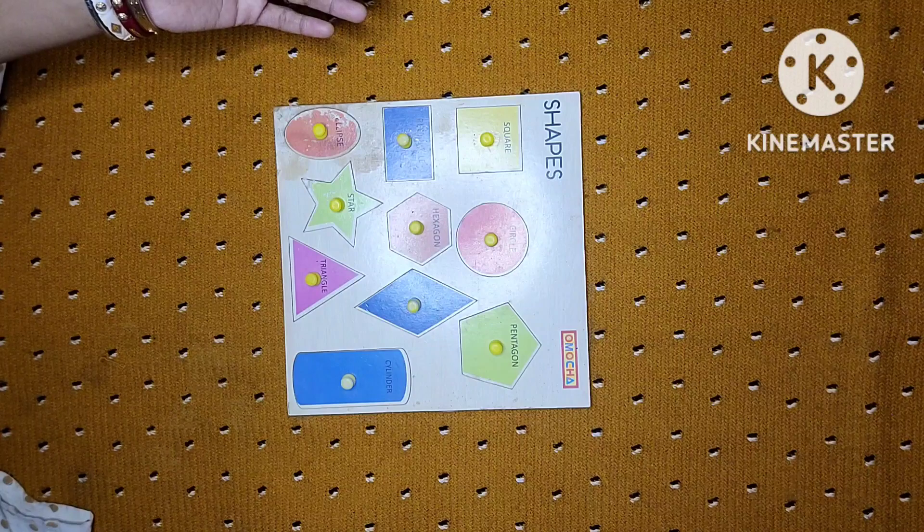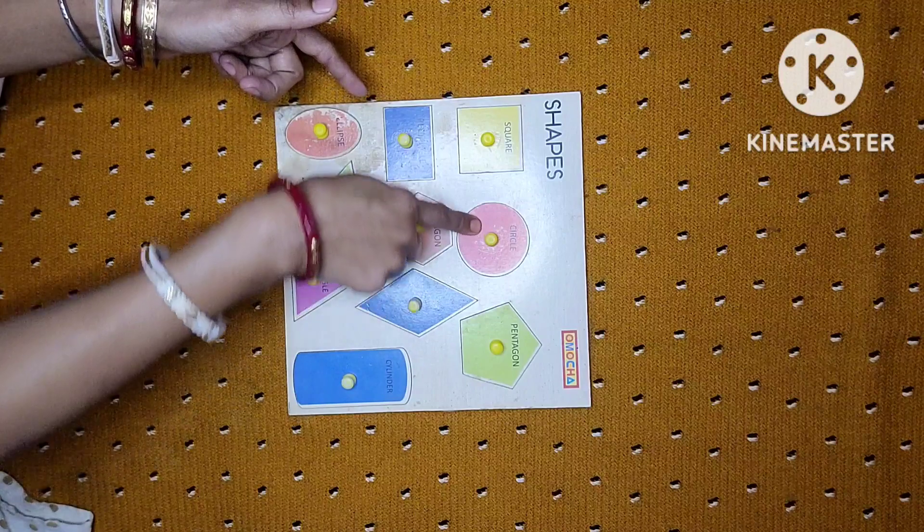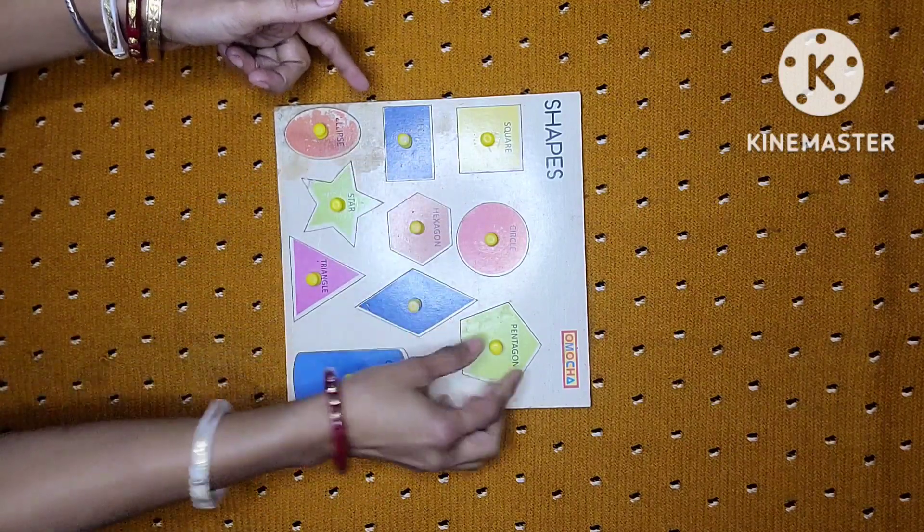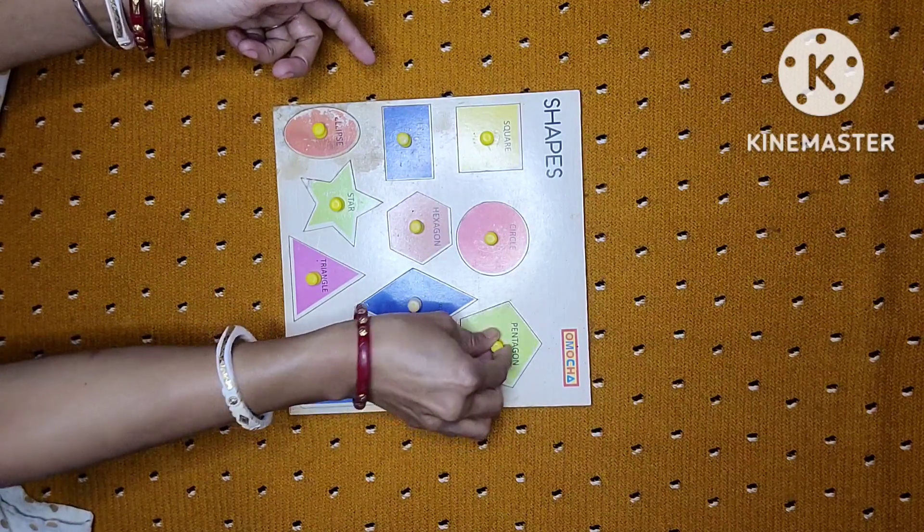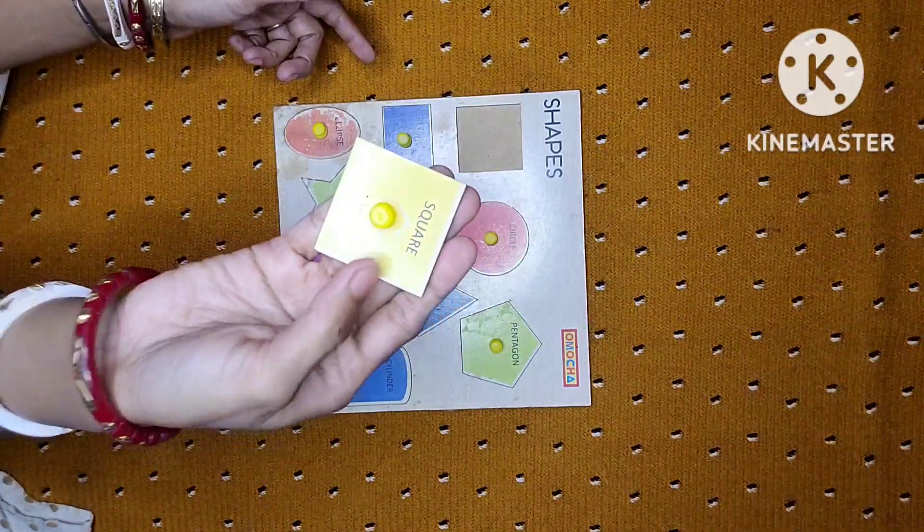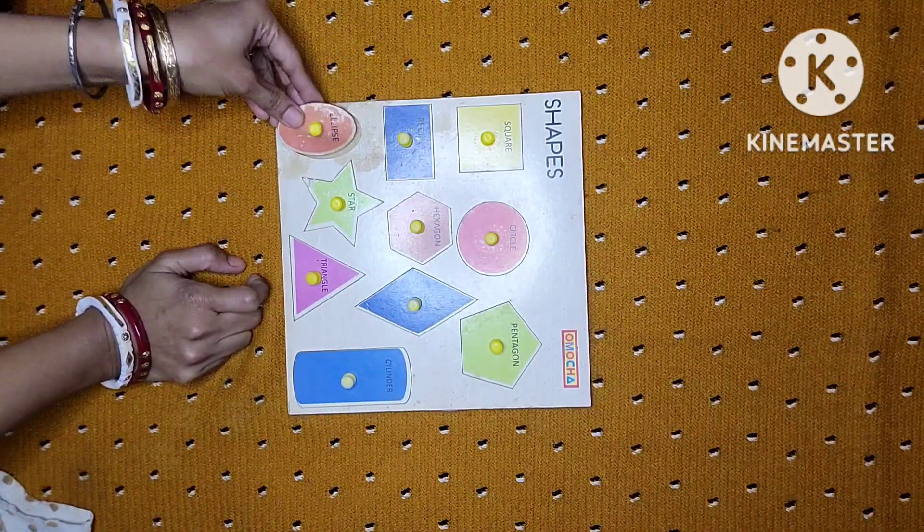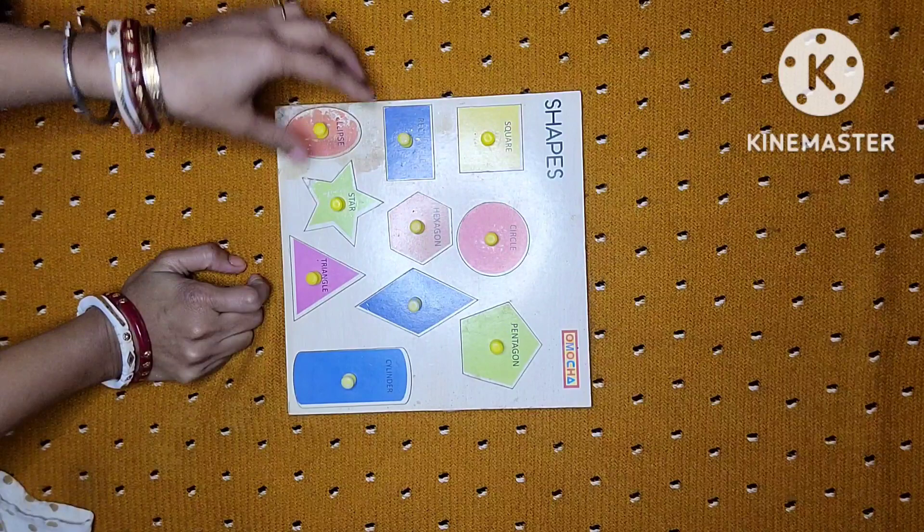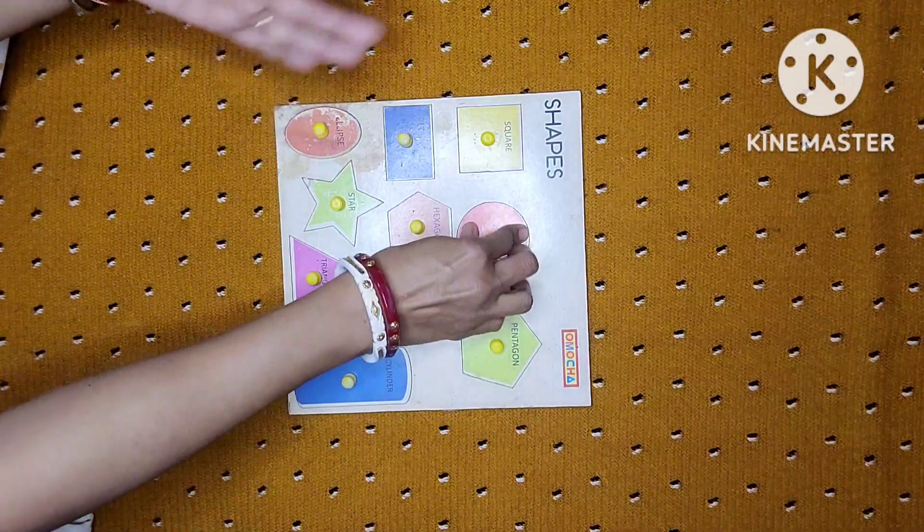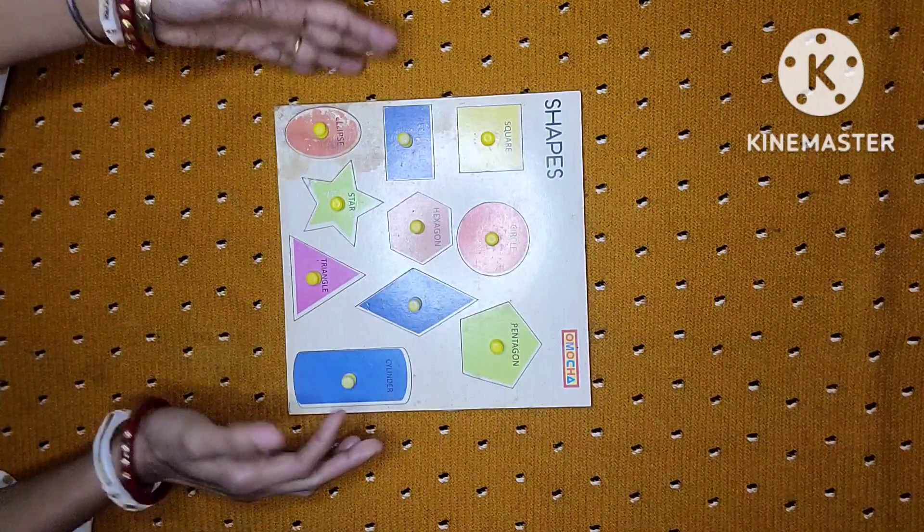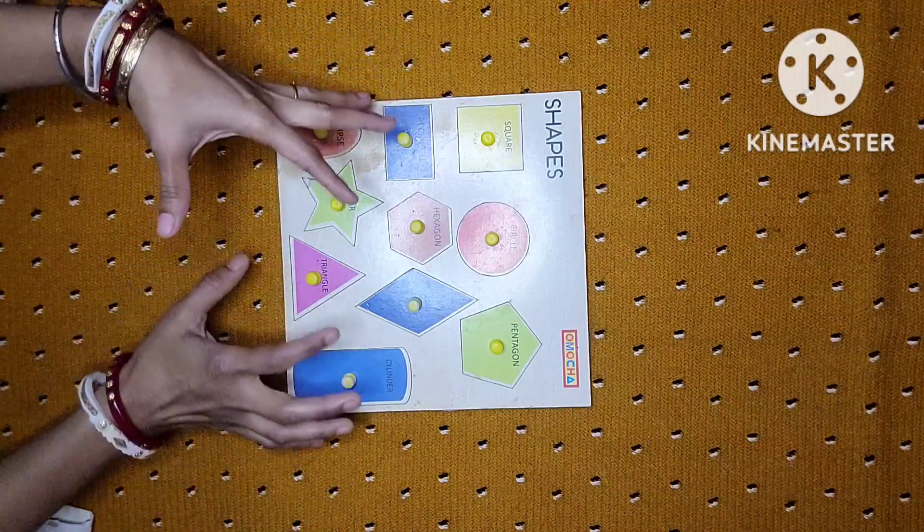But what we can do is make them revise - like see this is red, oh wow this is green, and this one is yellow. Wow, can you tell me which color is this? This is orange. So like this you can introduce, and if it is already introduced you can have the revision through this. You can play the color theme or color identification.